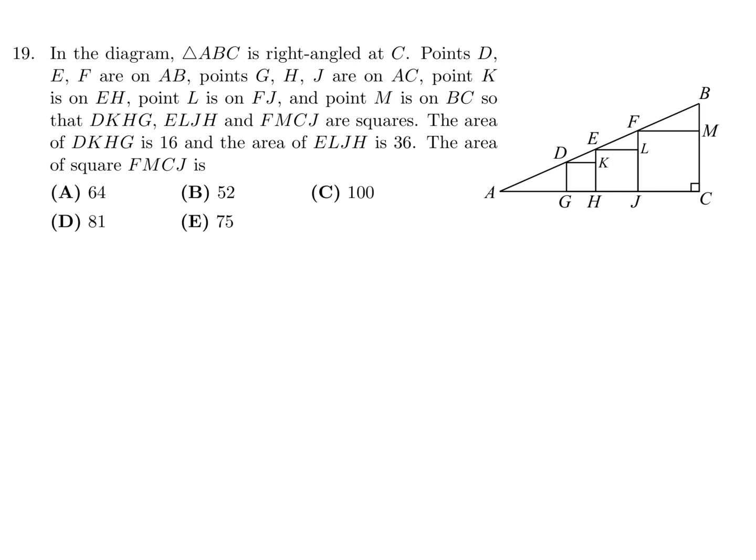In the diagram, triangle ABC is right-angled at C. Points D, E, F are on AB, points G, H, J are on AC, point K is on EH, L is on FJ, and M is on BC, so that DKHG, ELJH, and FMCJ are squares. The area of DKHG is 16. The area of ELJH is 36. The area of square FMCJ is.